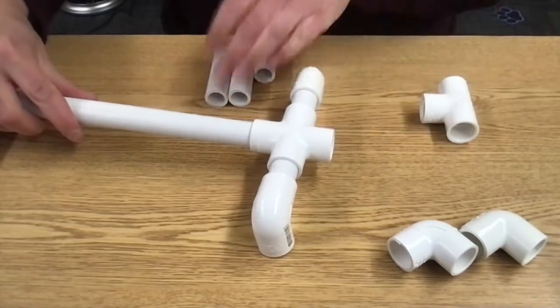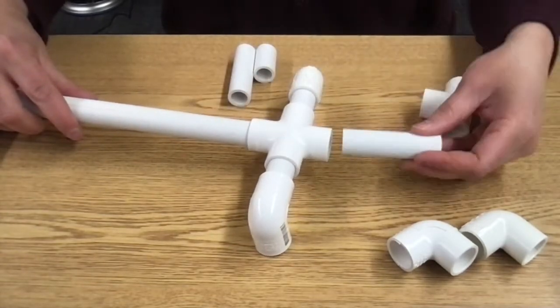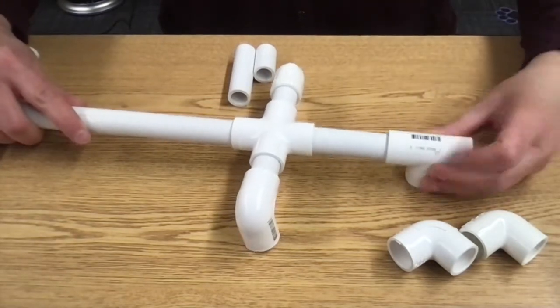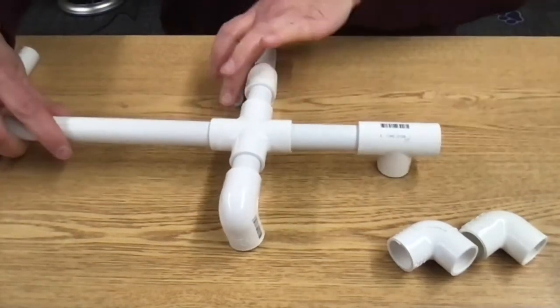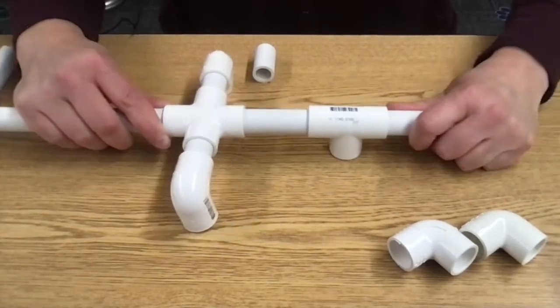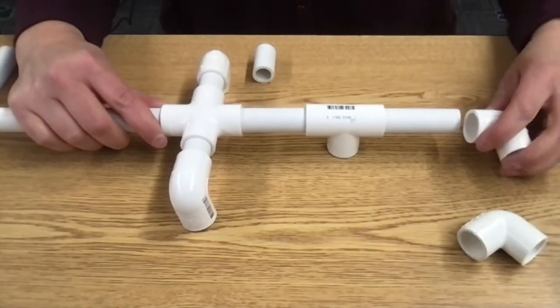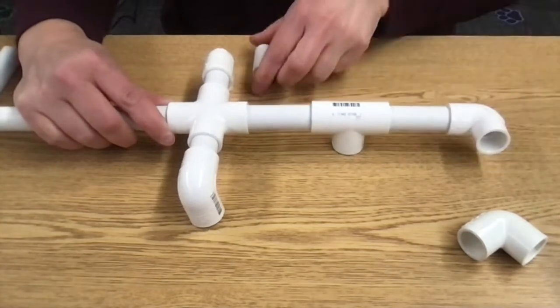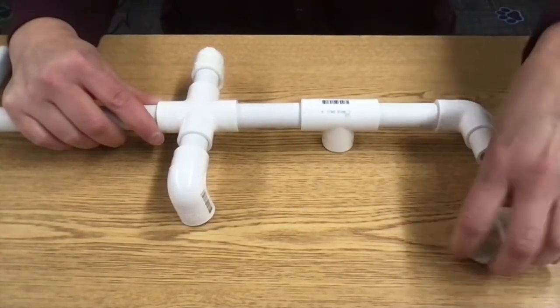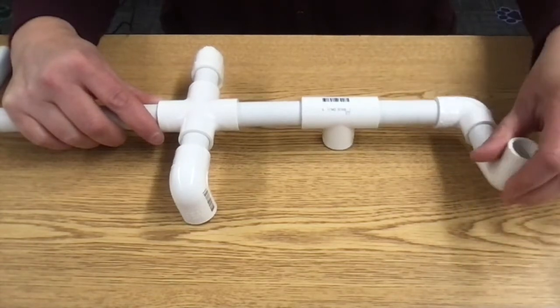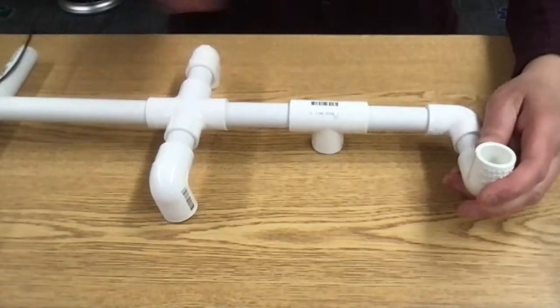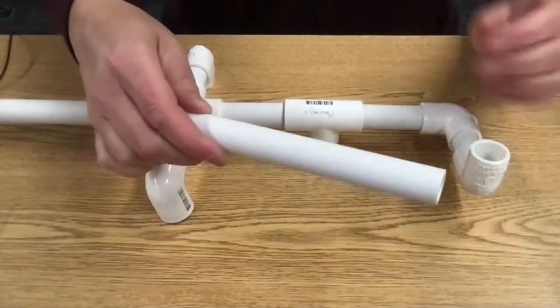Then to this end we're going to attach one of our three-inch pieces and the T-shaped piece and then another one of our three-inch pieces, a 90 degree elbow, our last one and a half inch piece, another 90 degree elbow, and then our eight-inch piece.